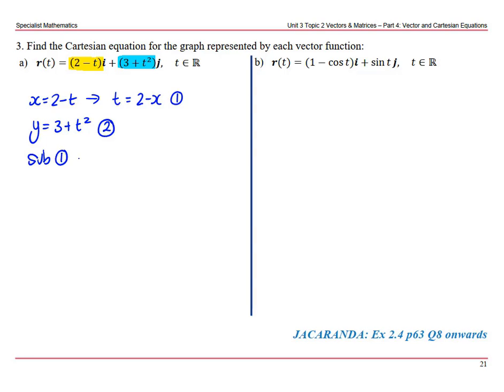Sub equation 1 into 2. We get y equals 3 plus (2 minus x) squared. Expand the brackets: 4 minus 4x plus x squared, which gives x squared minus 4x plus 7. And t was an element of the reals, so x will be an element of the reals because that is a parabola.